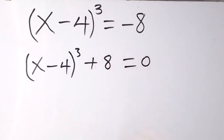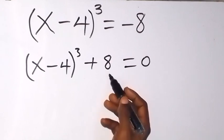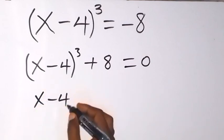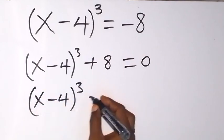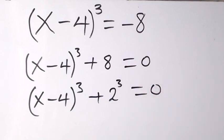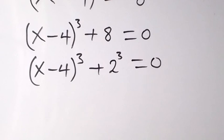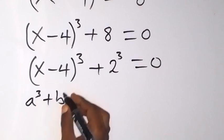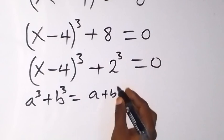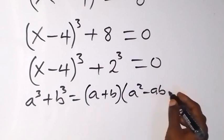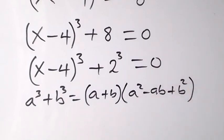We can express this as (x minus 4) raised to power 3 plus 2 raised to power 3, equals zero. There is an identity here — the sum of two cubes: a cubed plus b cubed can be written as (a plus b) times (a squared minus ab plus b squared).